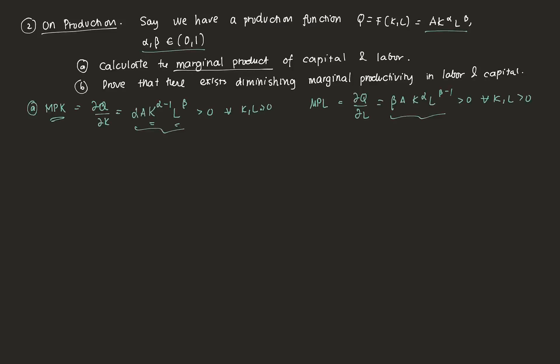Both marginal products are positive: increasing capital holding labor constant increases production, and increasing labor holding capital constant also increases production. Like utility, there is diminishing marginal productivity in both labor and capital. The second-order partial with respect to k squared gives alpha times alpha minus 1 times A times k^(alpha-2) times l^beta, which simplifies to alpha squared minus alpha times A times k^(alpha-2) times l^beta. Since alpha squared minus alpha is negative, this is less than 0 for all k, l greater than 0.